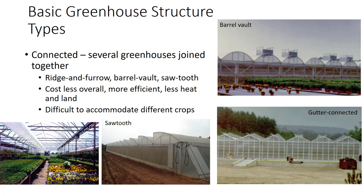Connected greenhouses have several greenhouses joined together. Various styles include ridge and furrow, barrel vault, and sawtooth greenhouses. Connected greenhouses cost less overall, are more efficient because workers and equipment can move through with ease, and require less heat and less land. The main disadvantage is that accommodating different crops requiring different environmental conditions is difficult.